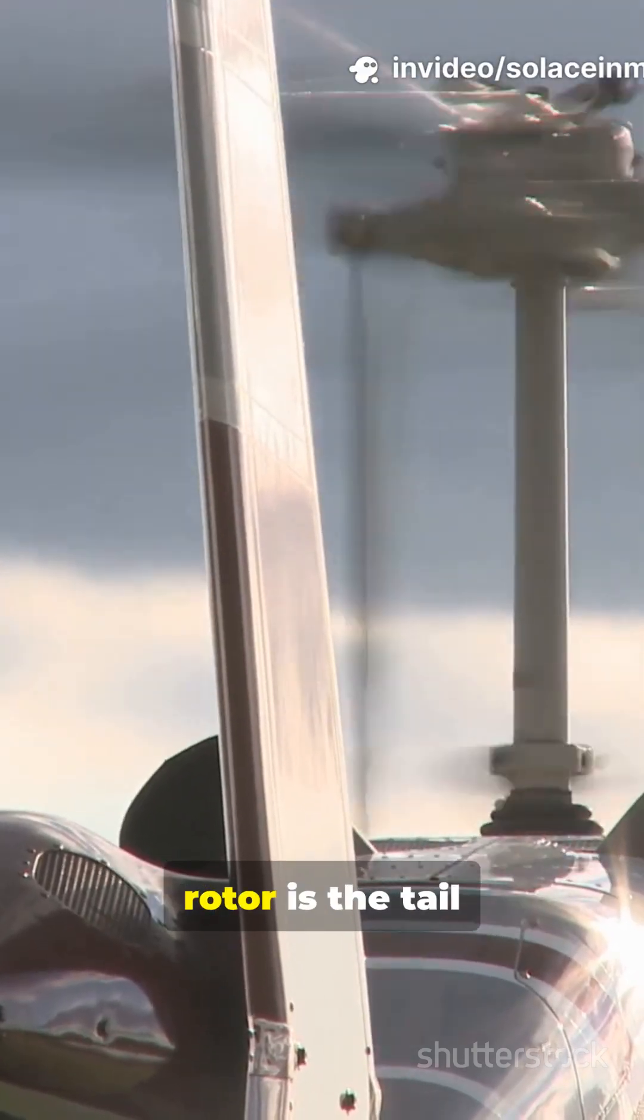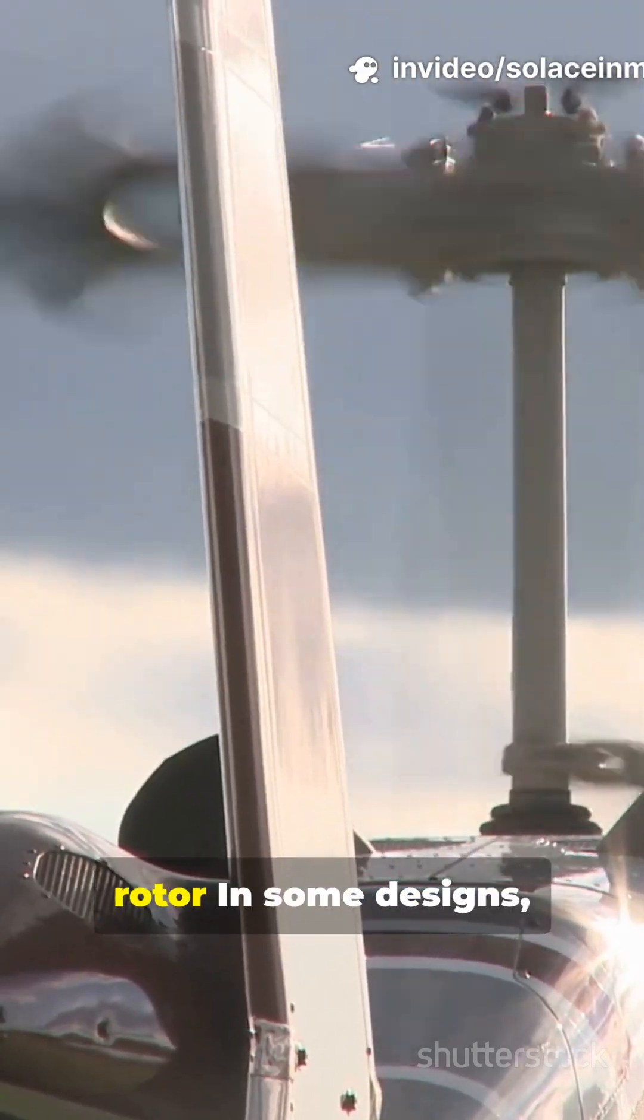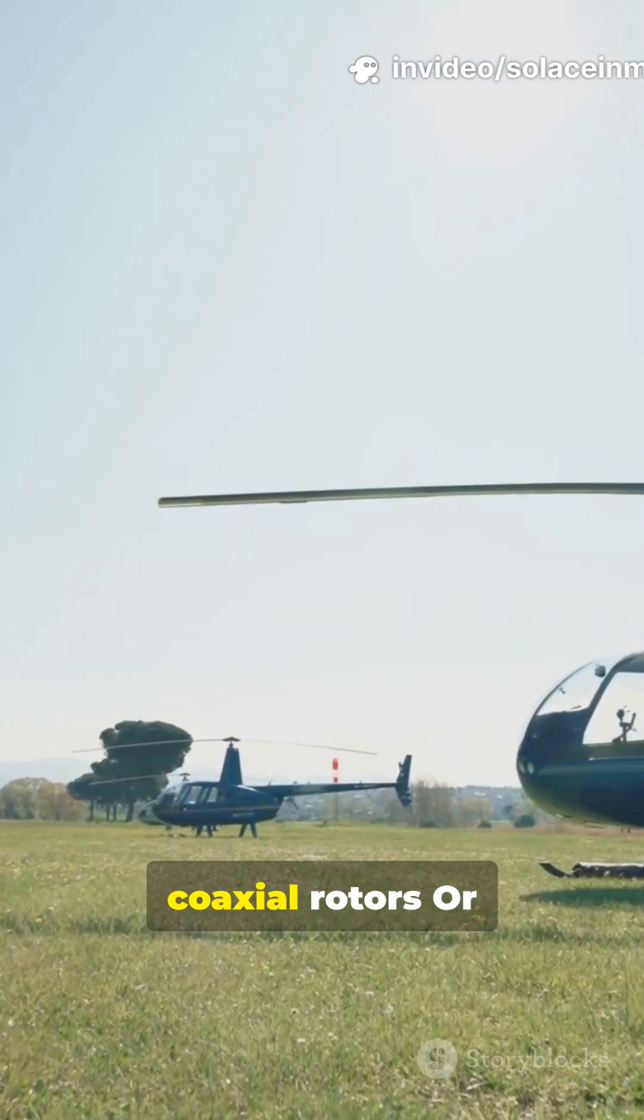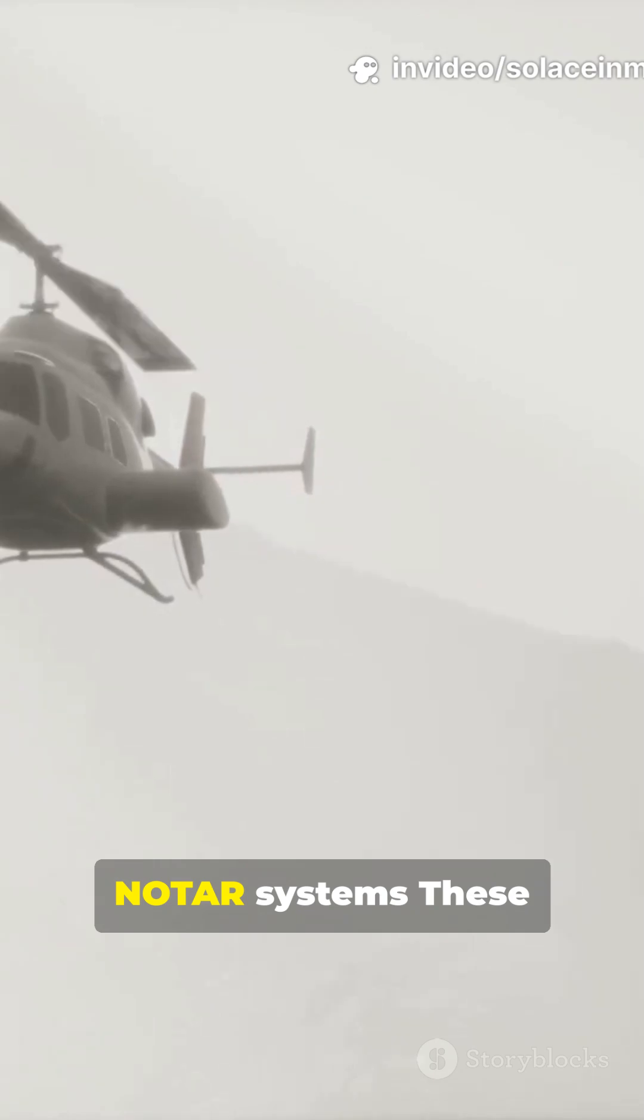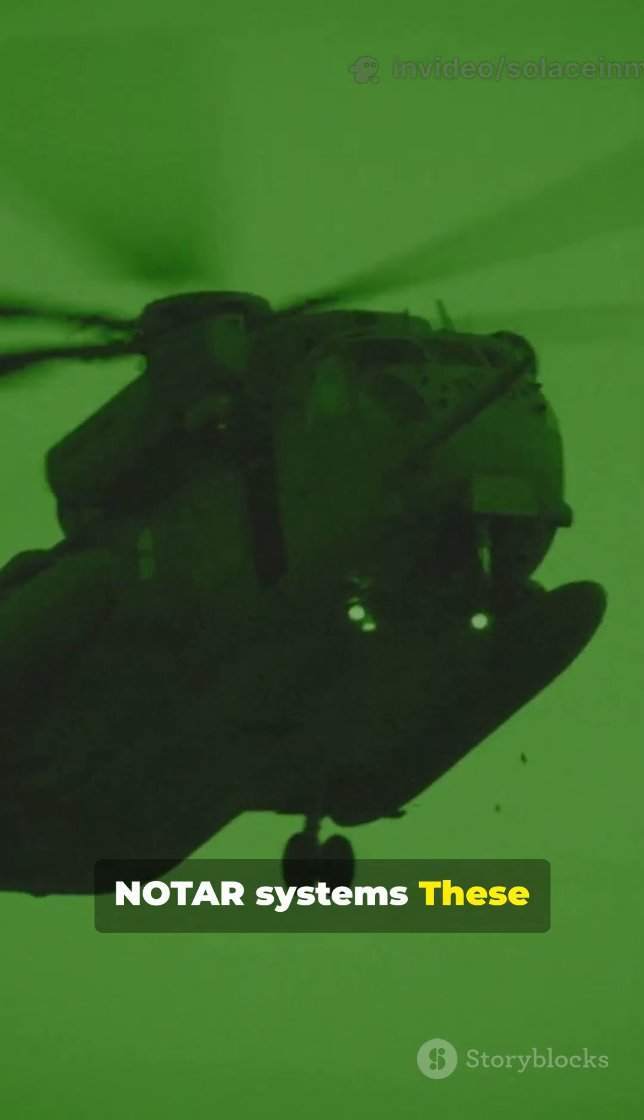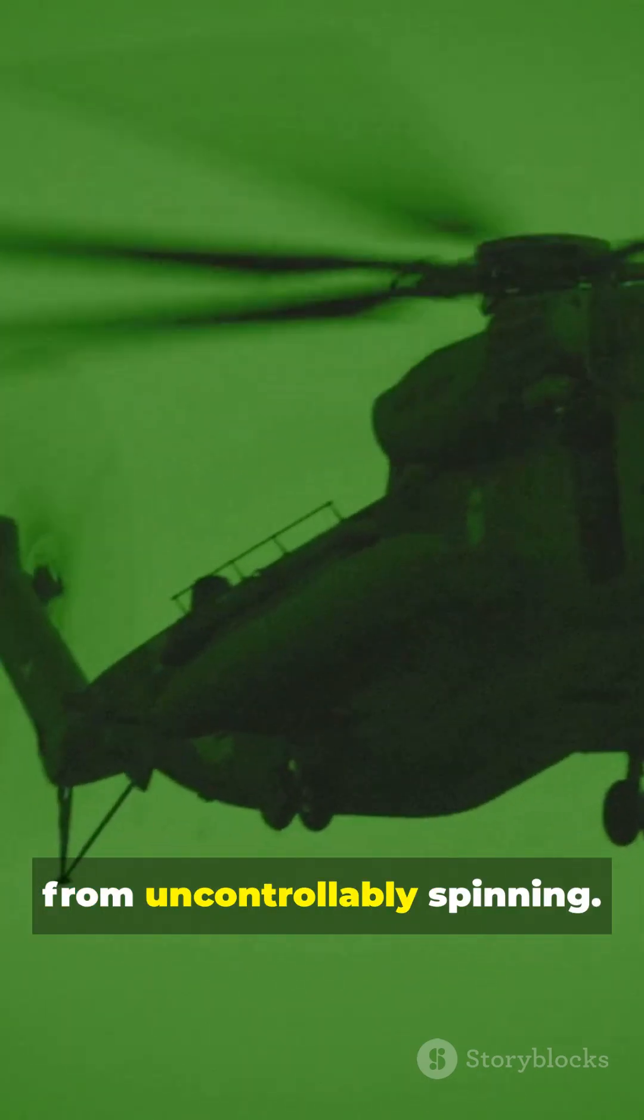Counteracting torque from the main rotor is the tail rotor. In some designs, coaxial rotors or NOTAR systems. These keep the fuselage from uncontrollably spinning.